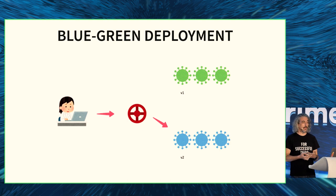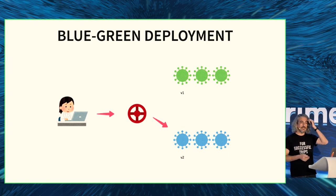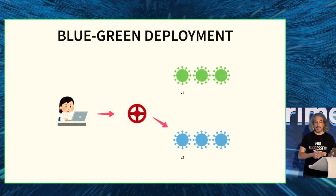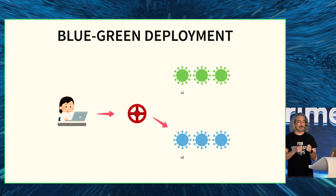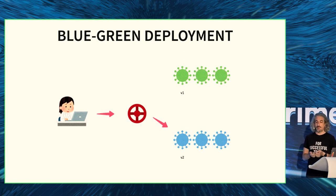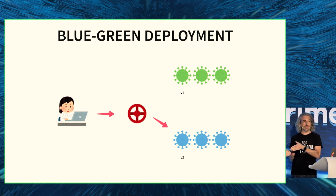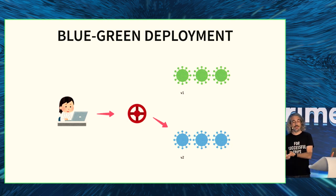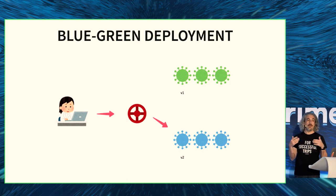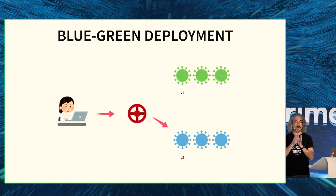Blue-green deployment is the same concept used for VMs, now applied to containers. You have two versions — V1 and V2. You have a load balancer and you switch from the old version to the new version. The advantage is if V2 is bad, you just switch the load balancer back — no redeployment needed, a very fast change. The problem is you typically need twice as many nodes or containers to run both during the evaluation period.